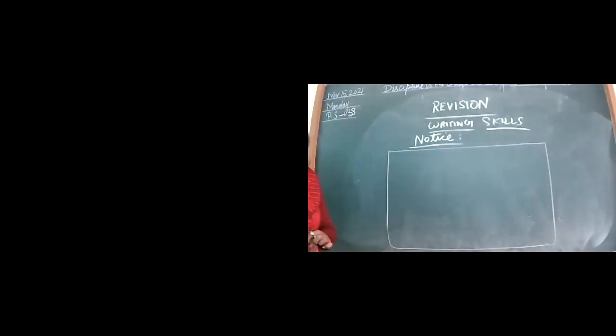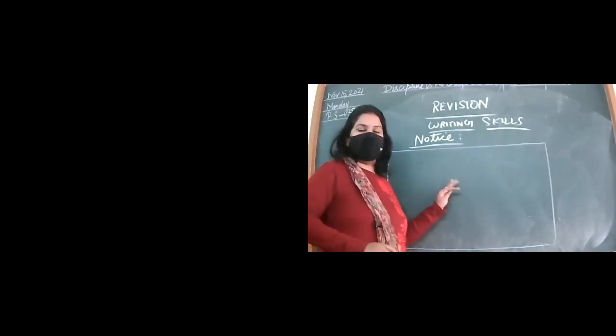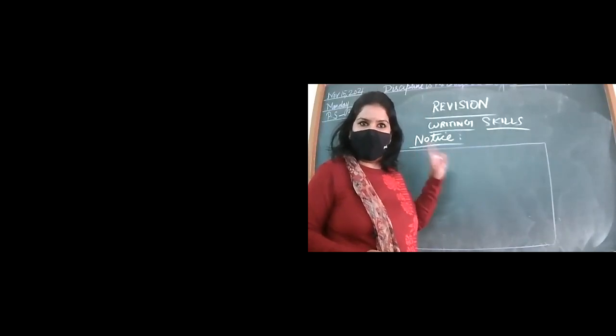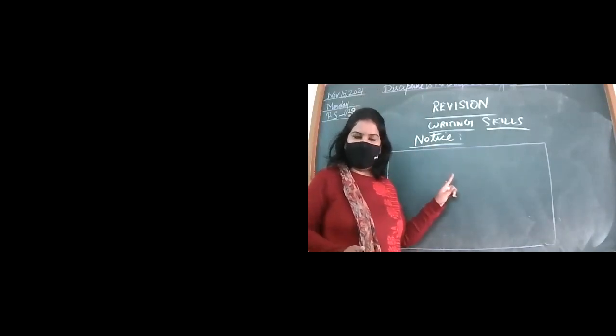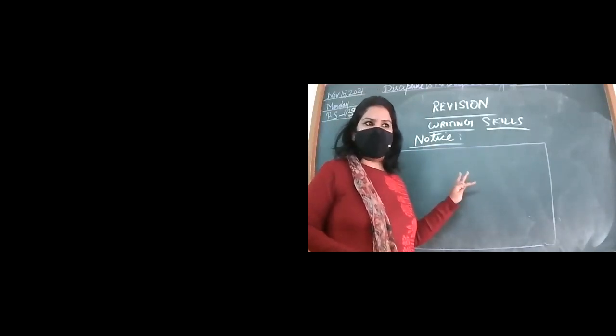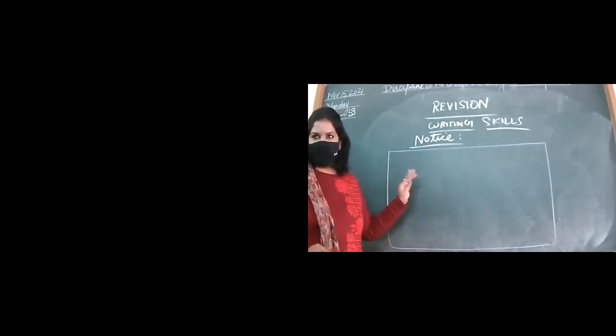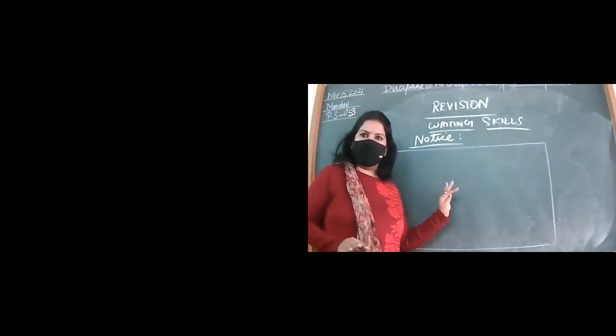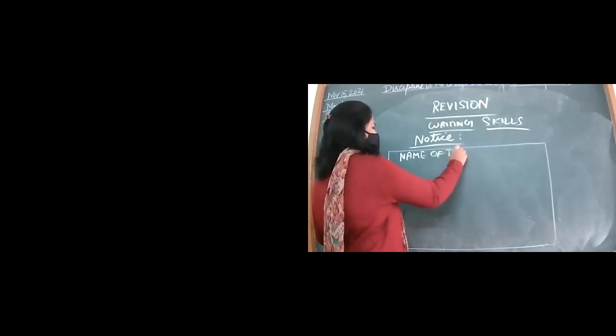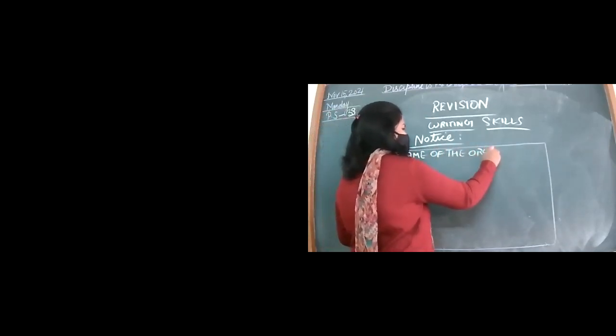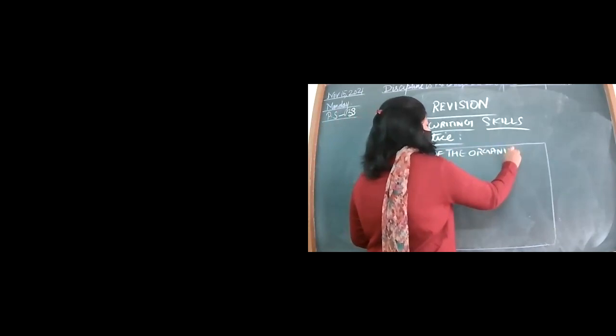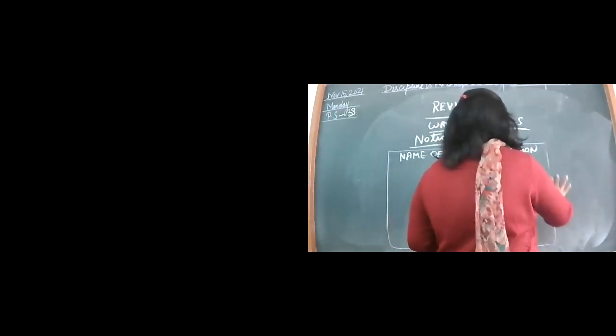Any question can be there regarding any simple thing to complicated thing. This is a short composition. It carries four to five marks only, and you draw a box. In the very first line, what do you write?